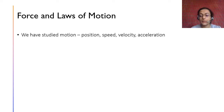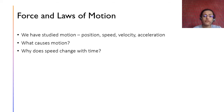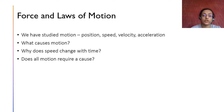We have studied motion, position, speed, velocity, and acceleration. But what causes that motion? We know that acceleration will cause the speed to increase, but what causes that acceleration? Why does speed change with time? Why does acceleration take place in the first place? Does all motion require a cause? If there is some change in position or increase in velocity, is it because of a cause or does it just happen spontaneously?